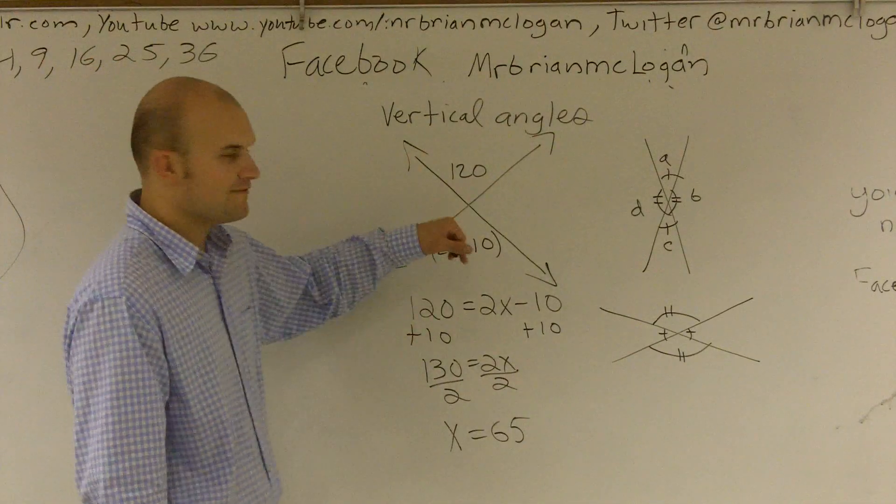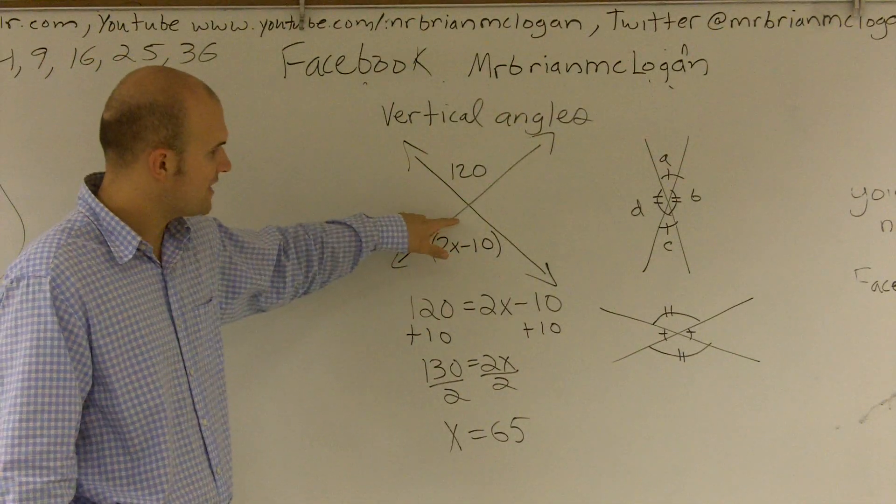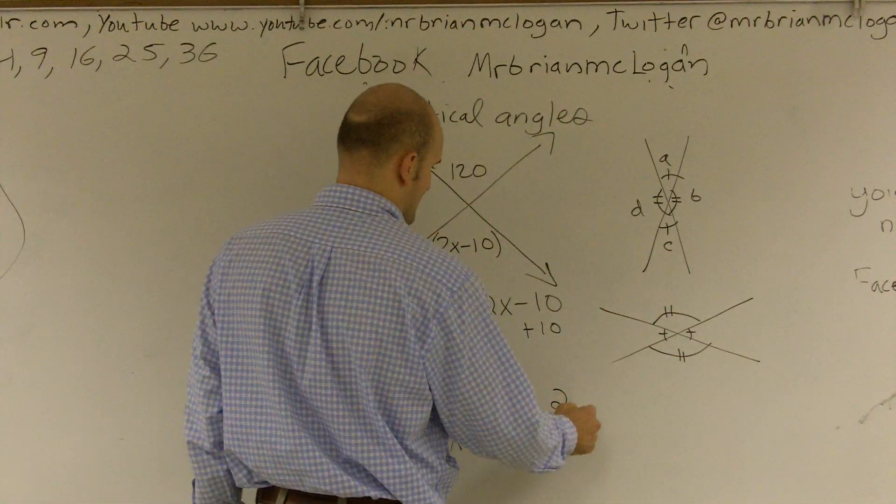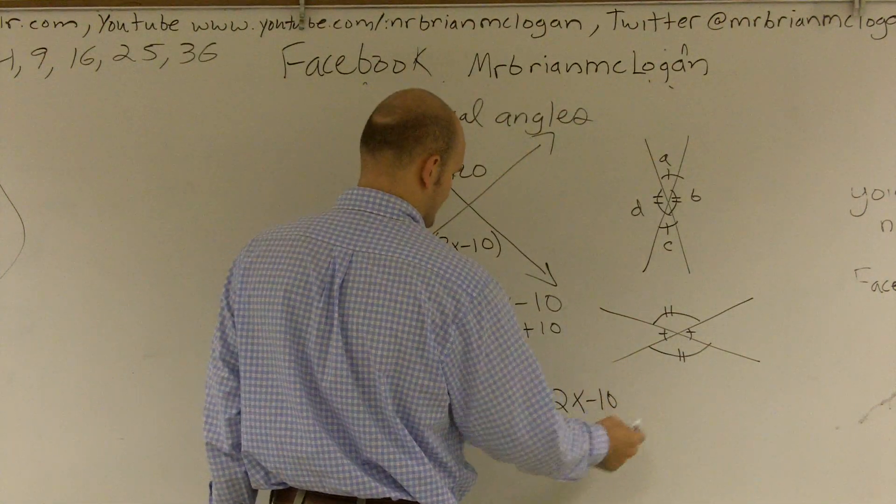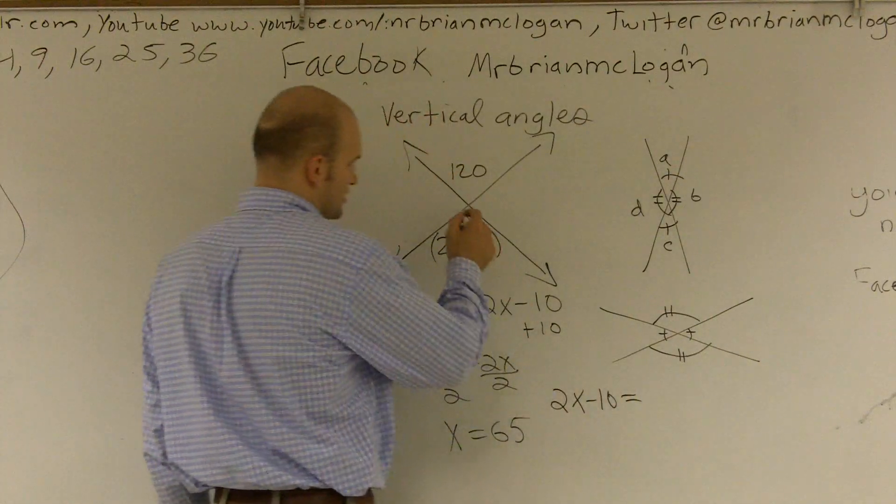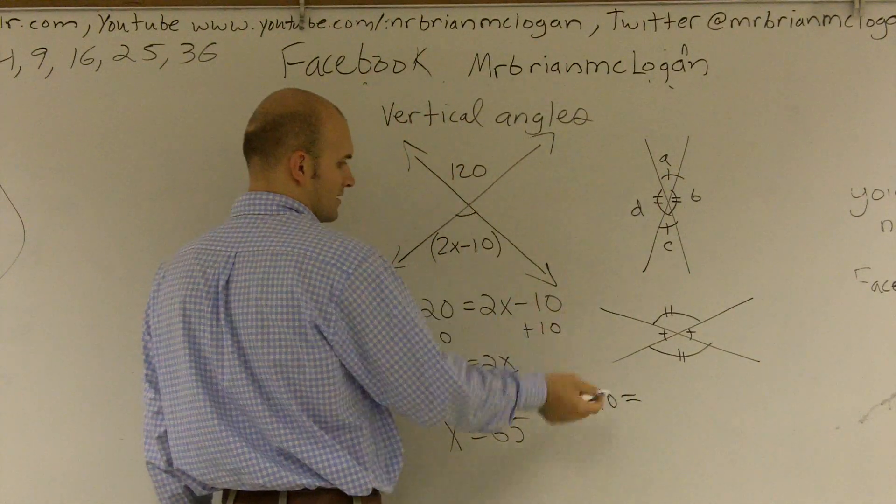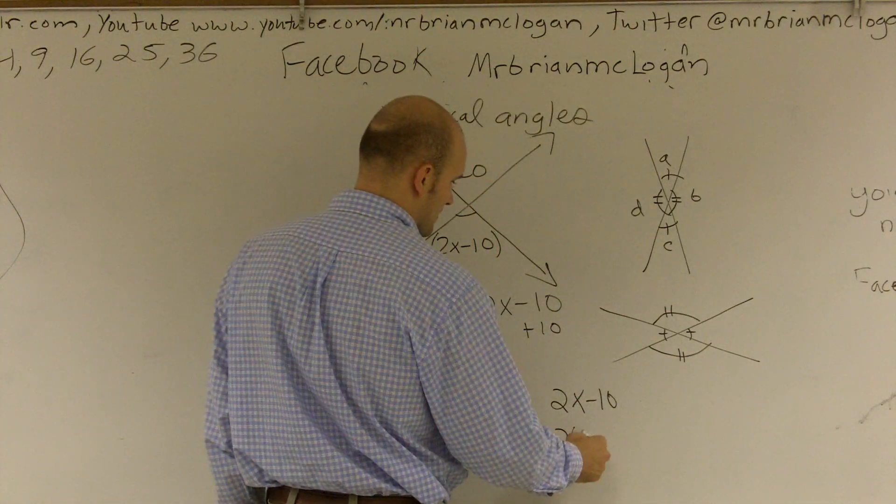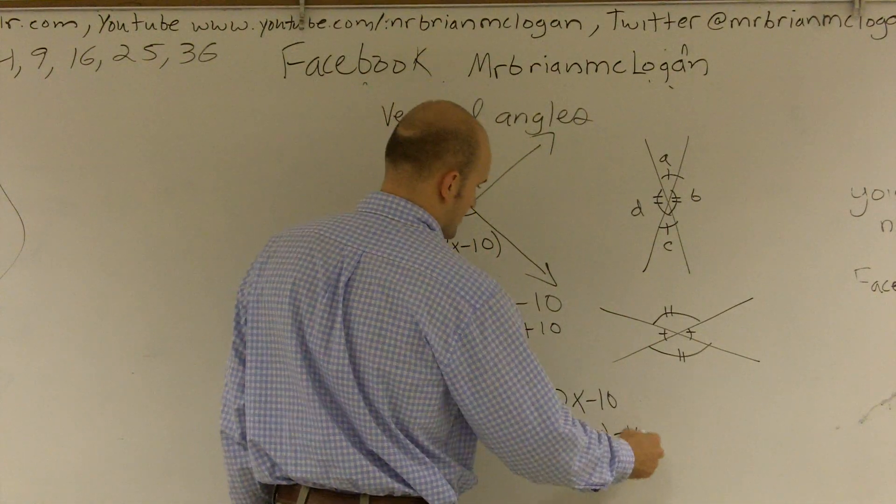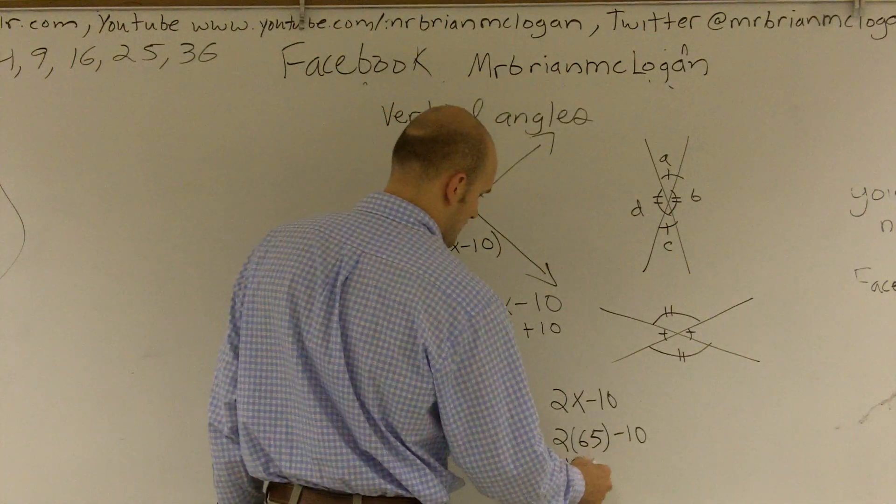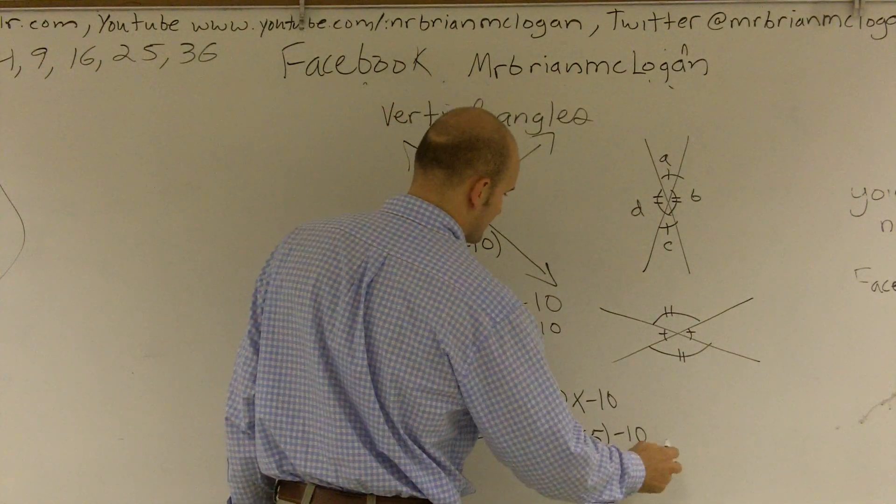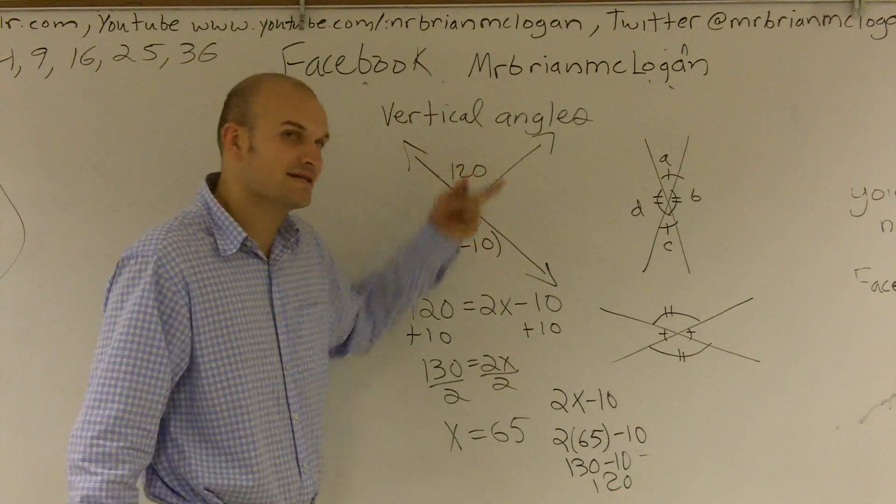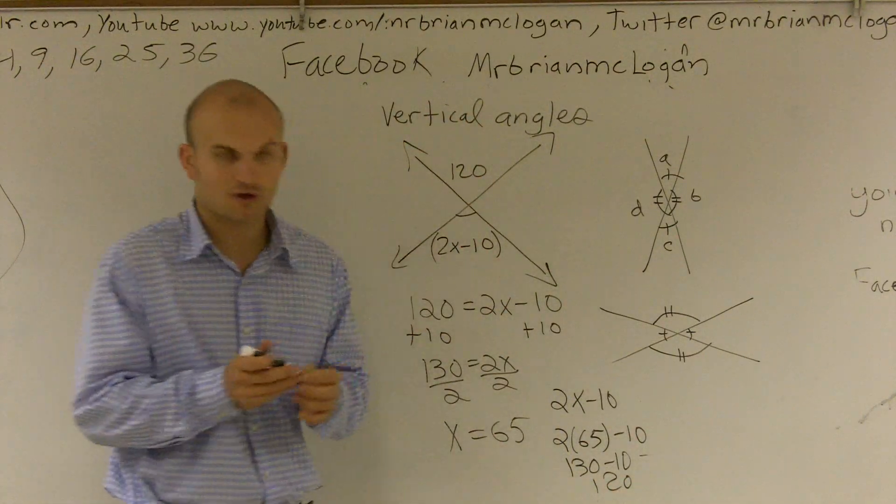All right. And then if I wanted to solve, let's say I wanted to find the value of this angle. Well, to double-check my work, I can do 2X minus 10 equals, let's just call this our angle. So if I plug in 65, 2 times 65 is 130. Minus 10 equals 120. Therefore, you notice exactly it's going to be 120 as well. So that's how you use vertical angles to solve for X.